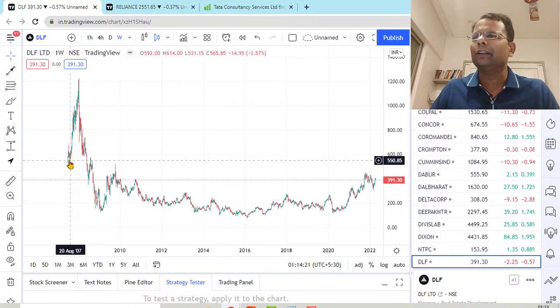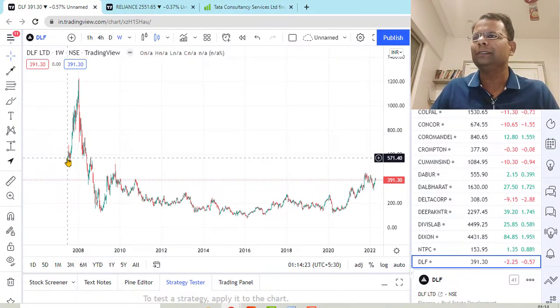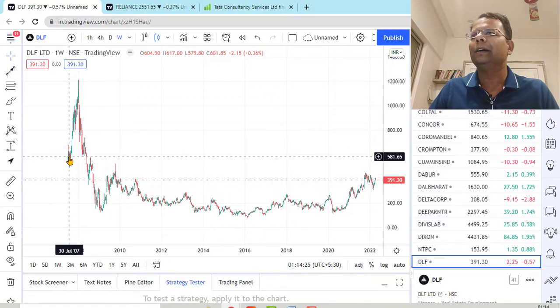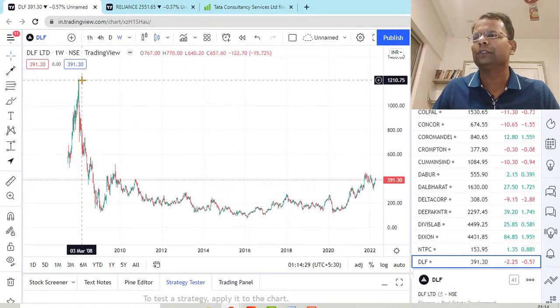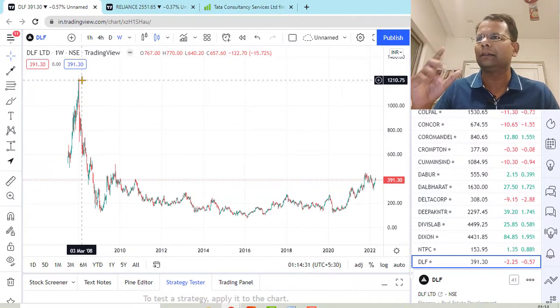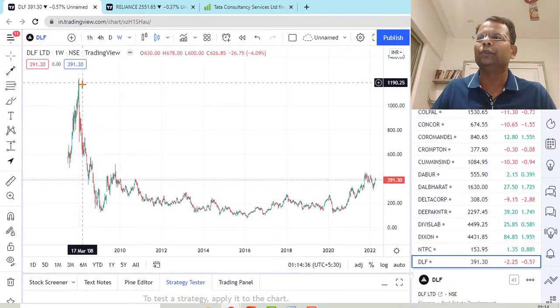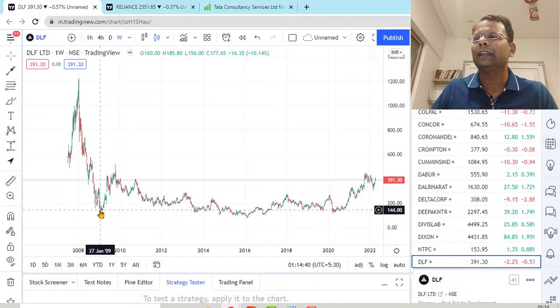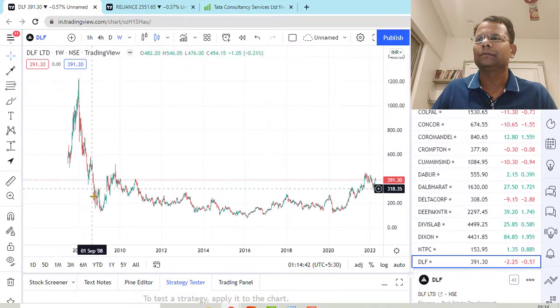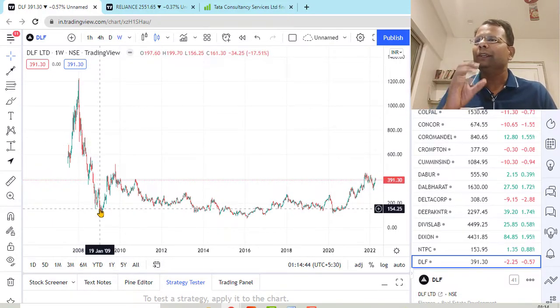DLF was started in July 2007 and it was trading at around 550-560 rupees at the beginning. It went up to almost double its price in the month of March 2008. So within one year, the stock price doubled.